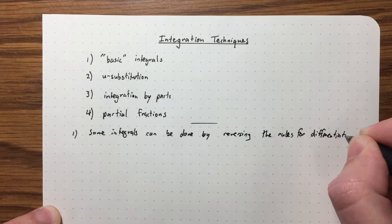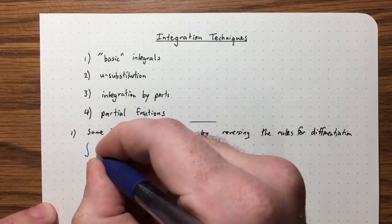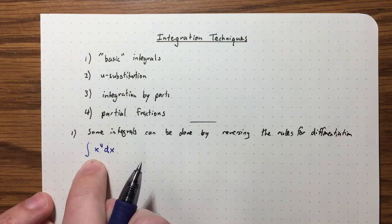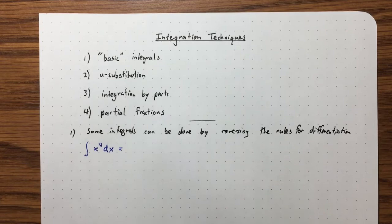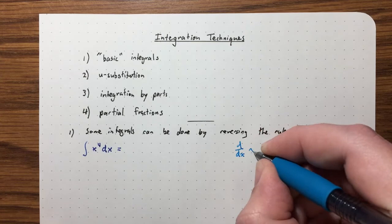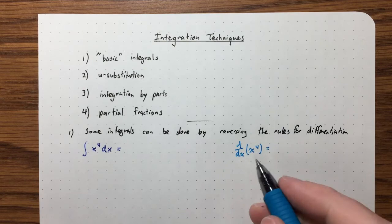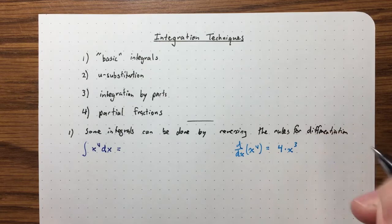Let me just give you an example. What if we want to do the integral of x to the 4 dx? I'm always going to be talking about indefinite integrals, in other words, anti-derivatives. To find this, let's recall how you take the derivative of x to the 4. You use the power rule: bring the exponent down as a coefficient, and then the exponent is reduced by one.